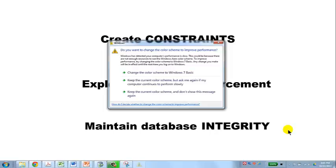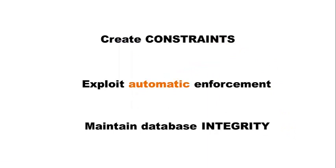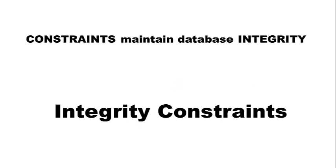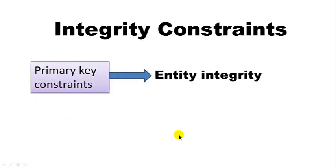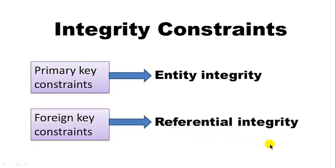Once you define the constraints, the database system treats them as rules and enforces them — it's a machine, it will blindly enforce the rules. Constraints maintain database integrity, which is why they are called integrity constraints. Primary key constraints enforce entity integrity, and foreign key constraints enforce referential integrity — ensuring that a value referencing another table's column cannot reference a non-existent value.